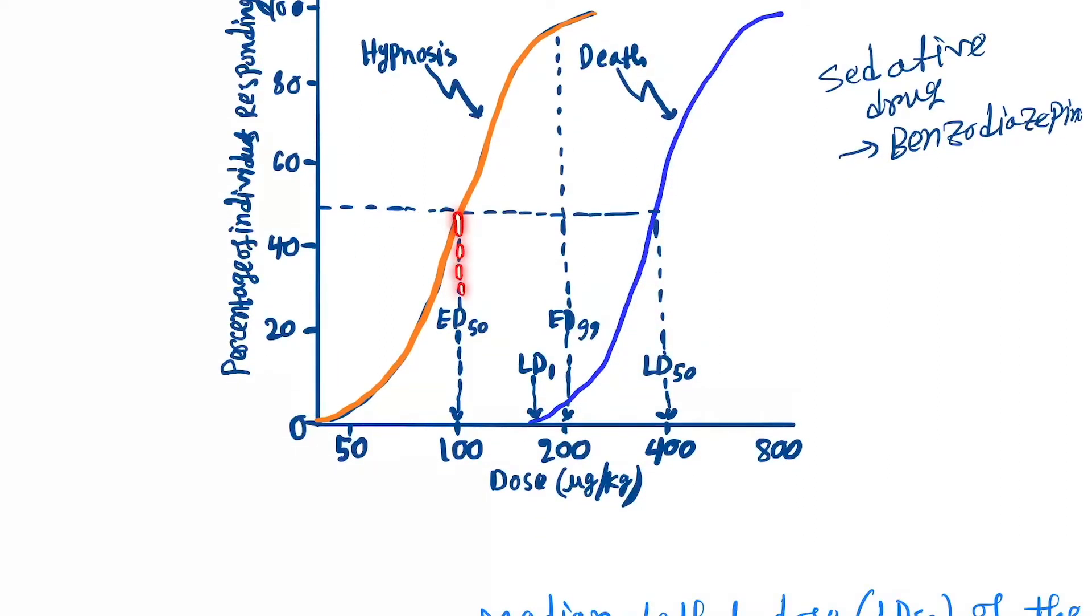Here you can see that ED50, the effective dose producing hypnosis, will be 100. And here where it's producing death, LD50 is 400. Now to determine the therapeutic index, TI equals LD50 divided by ED50.